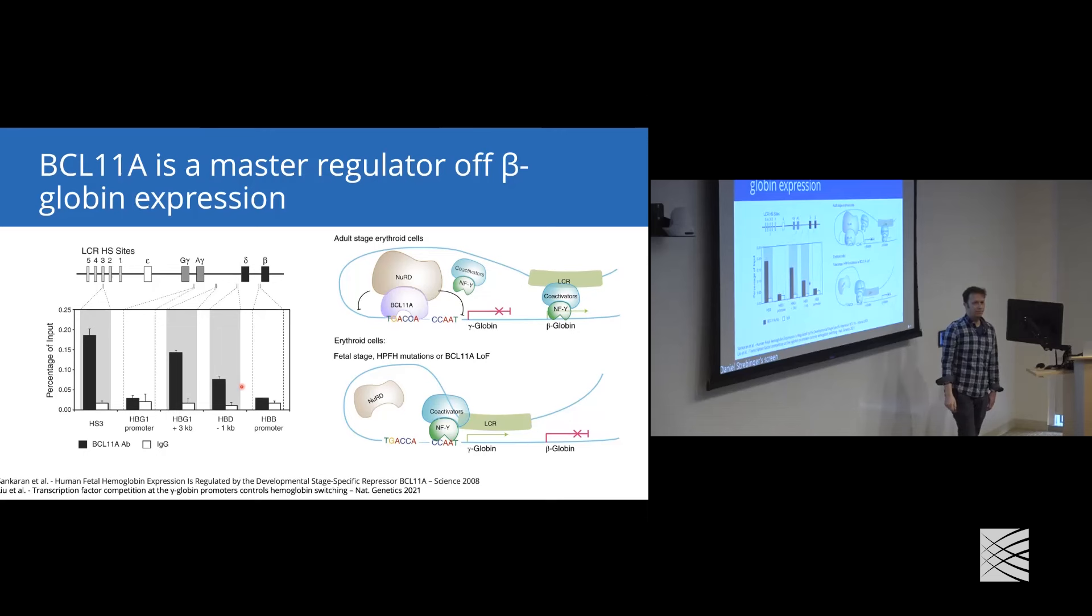It wasn't until recently that this mechanism was fully elucidated where BCL11A is binding upstream of the beta-globin locus to cause silencing of this region and causes domain looping, allowing the expression of beta-globin. What happens at around birth is that BCL11A starts to get expressed. It will start to repress gamma-globin and give rise to expression of beta-globin. At the fetal stage, however, BCL11A is absent, and so we get expression of gamma-globin.